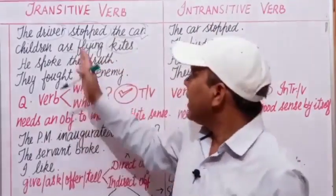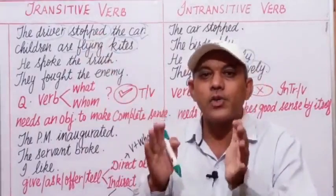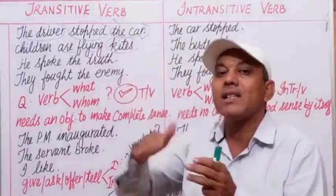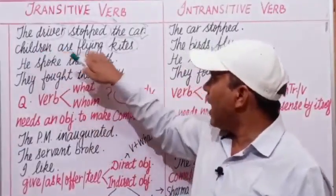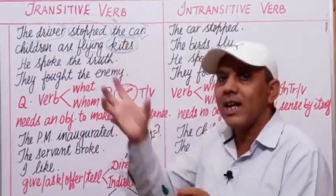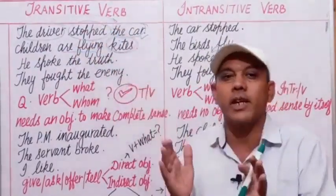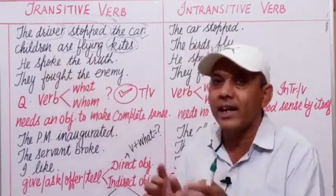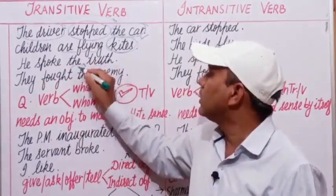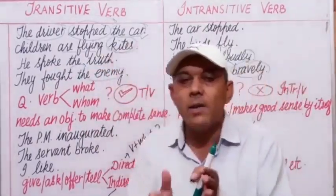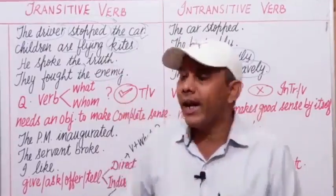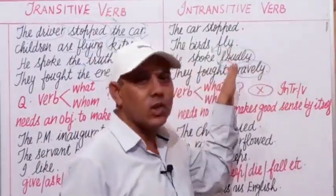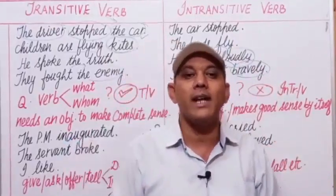In 'The driver stopped the car,' the action of stopping passes from the subject to the object — the car. In 'Children are flying kites,' the action is received by the kites. The action of speaking passes to the truth, and the action of fighting passes to the enemy. When the action passes over to an object, the verb is known as a transitive verb. When the action does not pass over to an object, the verb is known as an intransitive verb.